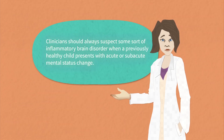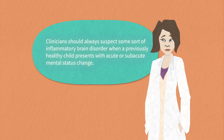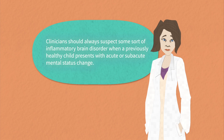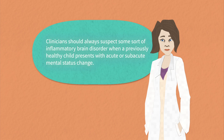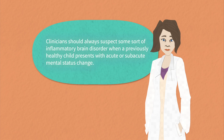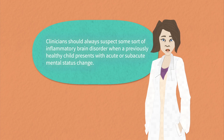Clinicians should always suspect some sort of inflammatory brain disorder when a previously healthy child presents with acute or subacute symptom change such as the development of seizures, neurological deficits, cognitive or memory difficulties, movement abnormalities, or psychiatric symptoms. For further information about evaluation and treatment of pediatric inflammatory brain disorders, please see articles by Dale, Grouse, and Britton in the reference section.